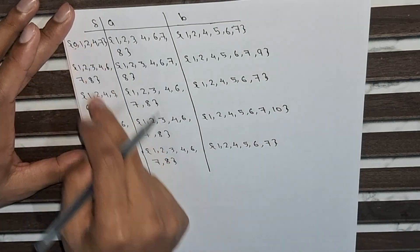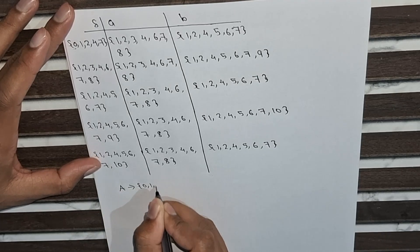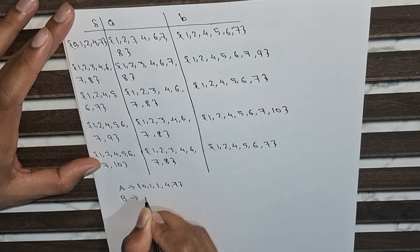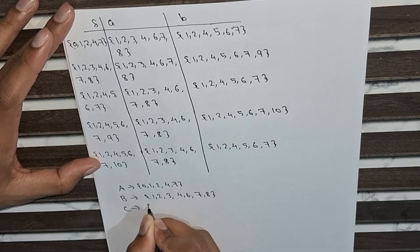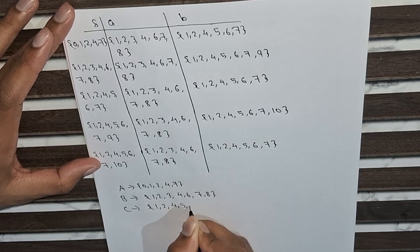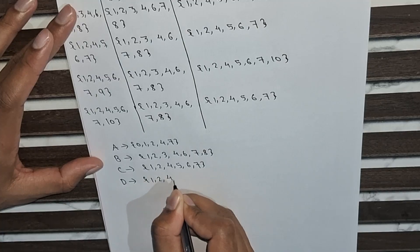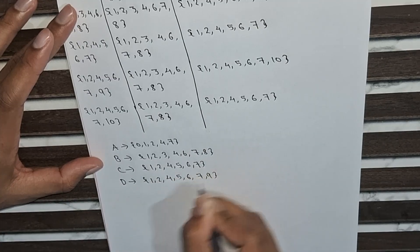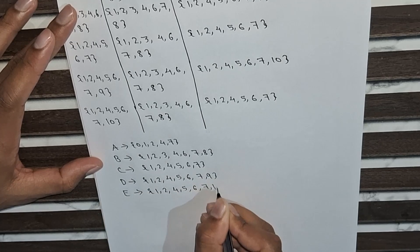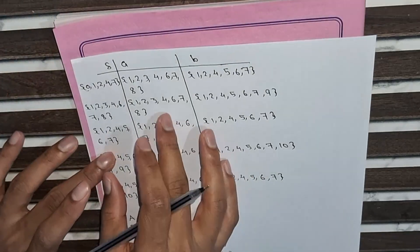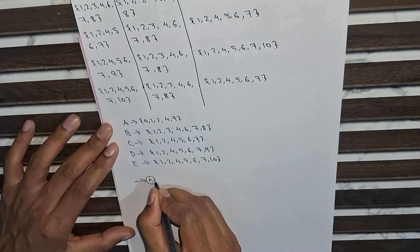For simplification, we assign single variable names to each state set: let A = zero, one, two, four, seven; B = one, two, three, four, six, seven, eight; C = one, two, four, five, six, seven; D = one, two, four, five, six, seven, nine; and E = one, two, four, five, six, seven, ten. With the help of this transition table we will make the DFA diagram, with A as the starting point.